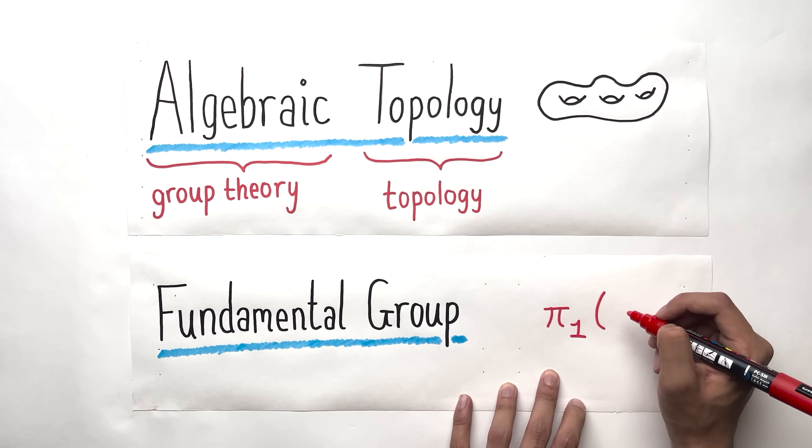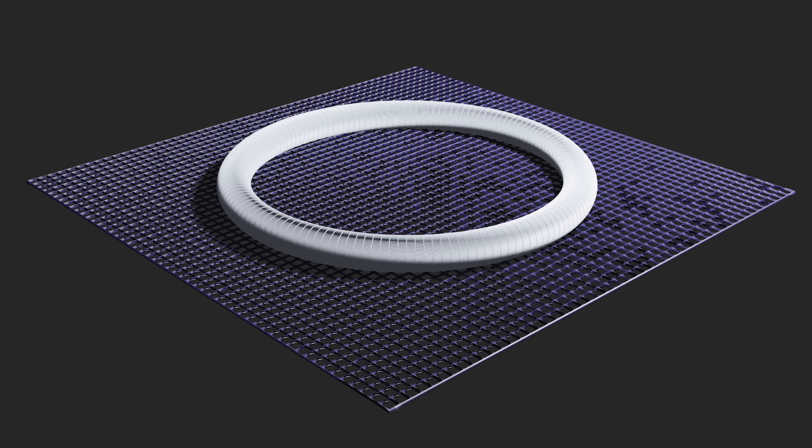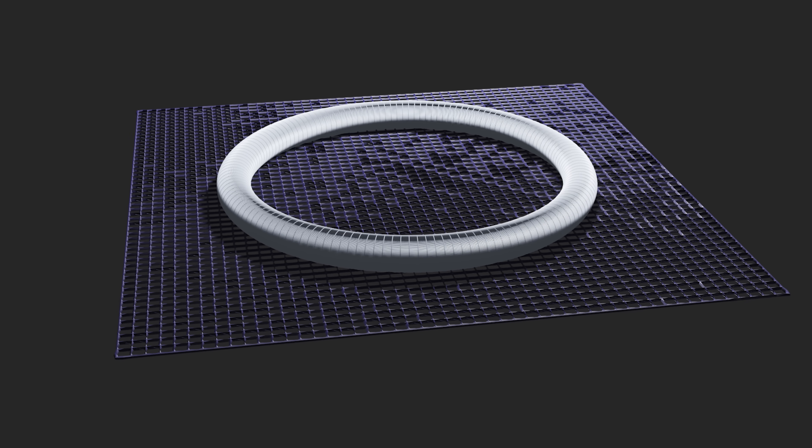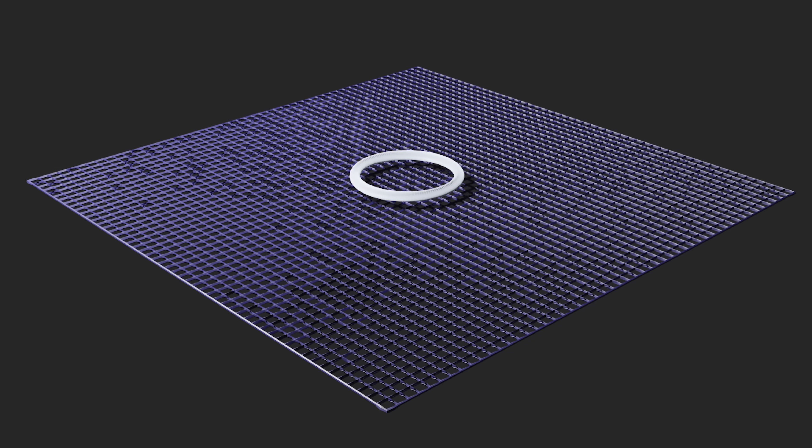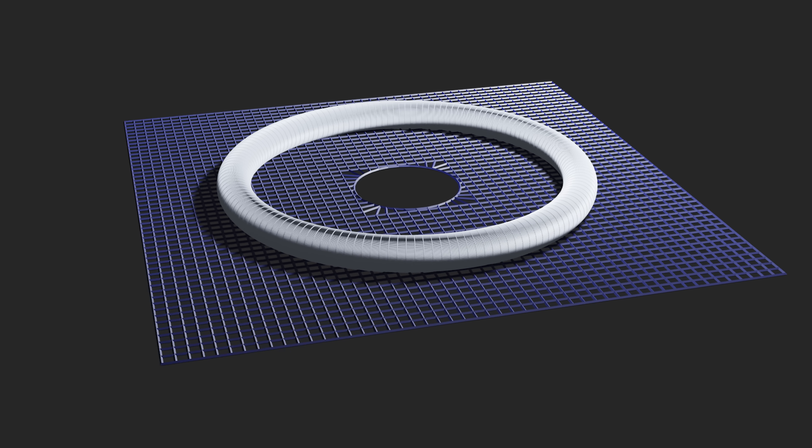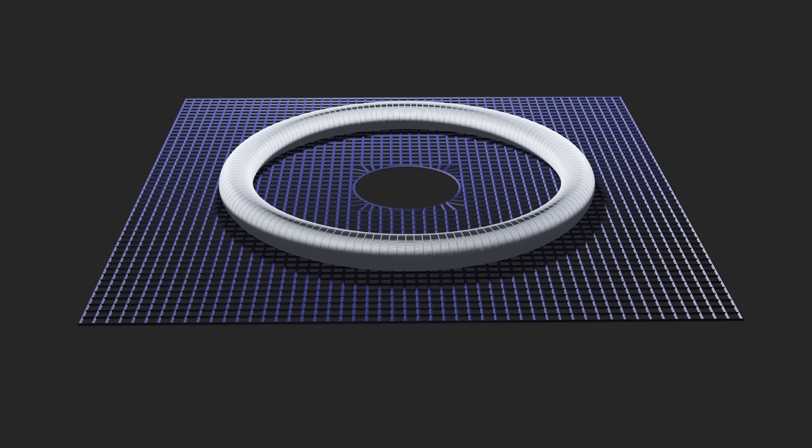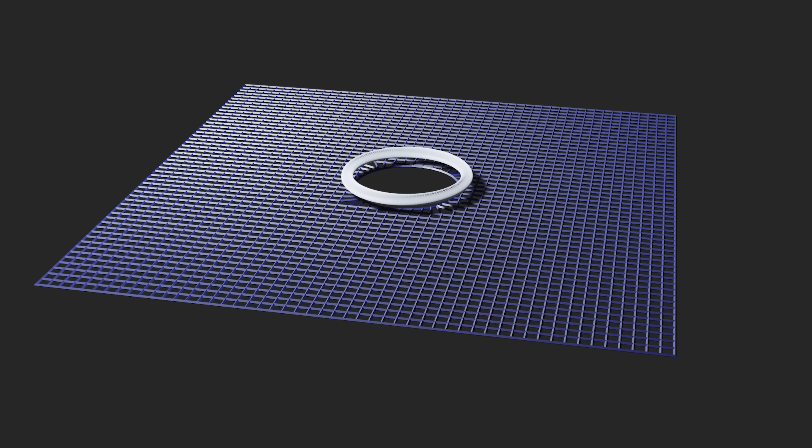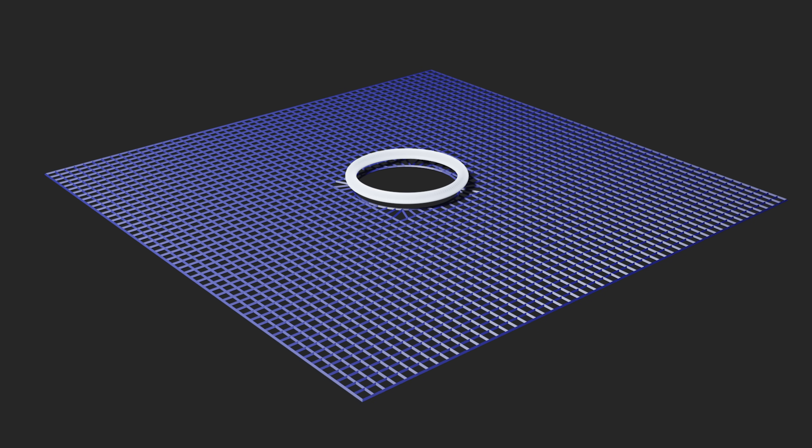We'll begin with a very basic idea. Suppose you have a space with no holes, and you take a loop on that space. You can always contract that loop to a point, because it has no holes. But if your space does have a hole, you can't contract this loop to a point, because it'll get caught on the hole. We'll use this as a test to find holes.